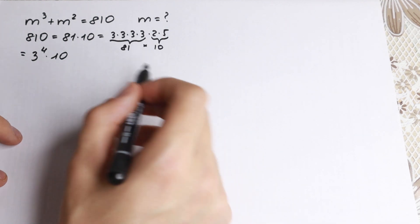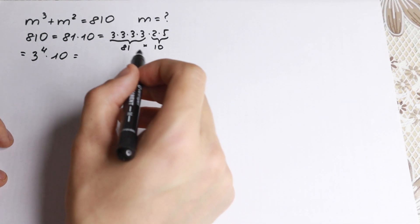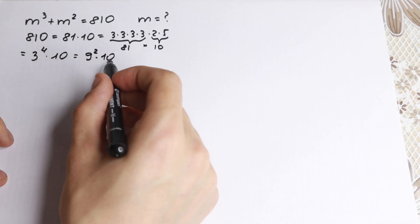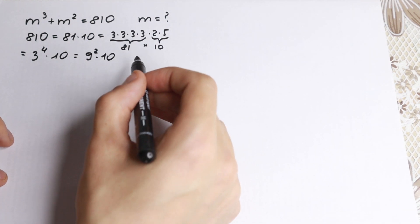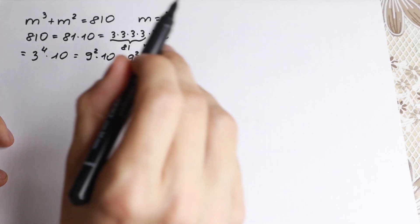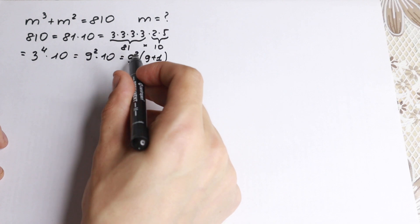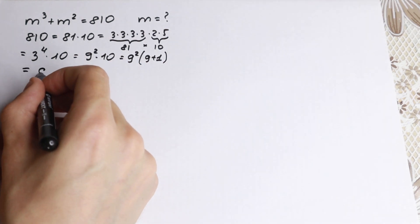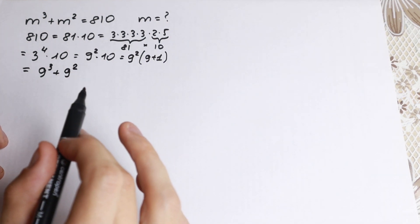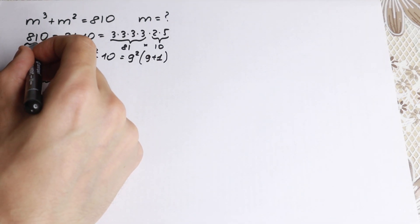We can also write 81 as 9 squared times 10. But here is the main trick: let's write that 10 as 9 + 1. If we write 10 as 9 + 1 and multiply through by 9 squared, we will have 9³ + 9². This is a really interesting moment.